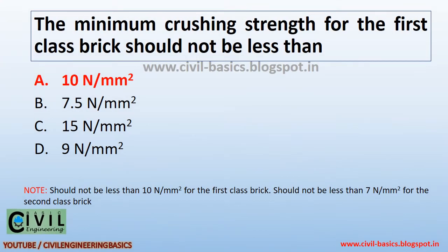The minimum crushing strength for the first class brick should not be less than 10 newton per millimetre squared. For the second class brick, it should not be less than 7 newton per millimetre squared.